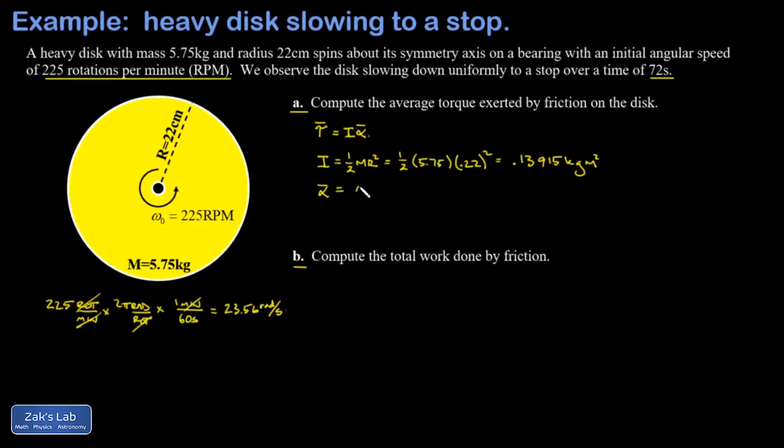The average angular acceleration is just the rate of change in the angular speed. I'm not going to worry about plus or minus signs; I know this thing is slowing down. My original angular velocity was 23.56 radians per second and it slows all the way to zero, so the magnitude of that change is 23.56, and it happens in 72 seconds. When I run the numbers, this comes out to 0.327 radians per second squared.